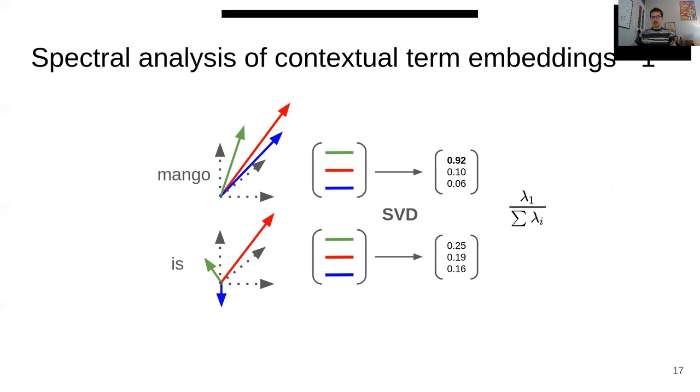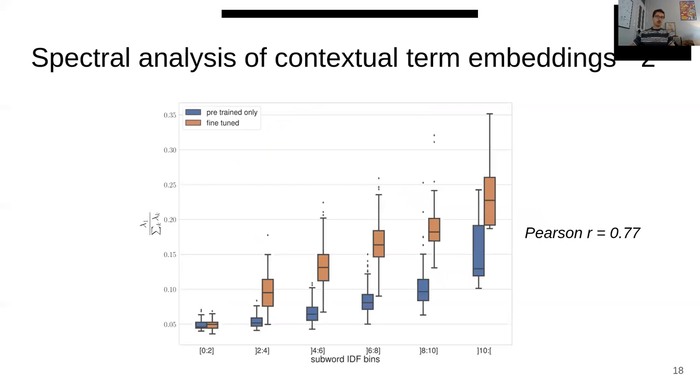How do we check this? We conducted a spectral analysis of contextual term embeddings. We first selected some terms, actually all the terms appearing in our query set. We iterated over the collection and collected the contextual embeddings for these terms. Then we use an SVD decomposition on each matrix. We check if there is a general direction by inspecting the ratio of the first eigenvalue over the sum. We plotted this measure against IDF and got a confirmation of our intuition. Terms with high IDF tend to point in the same direction as the ratio increases with IDF.